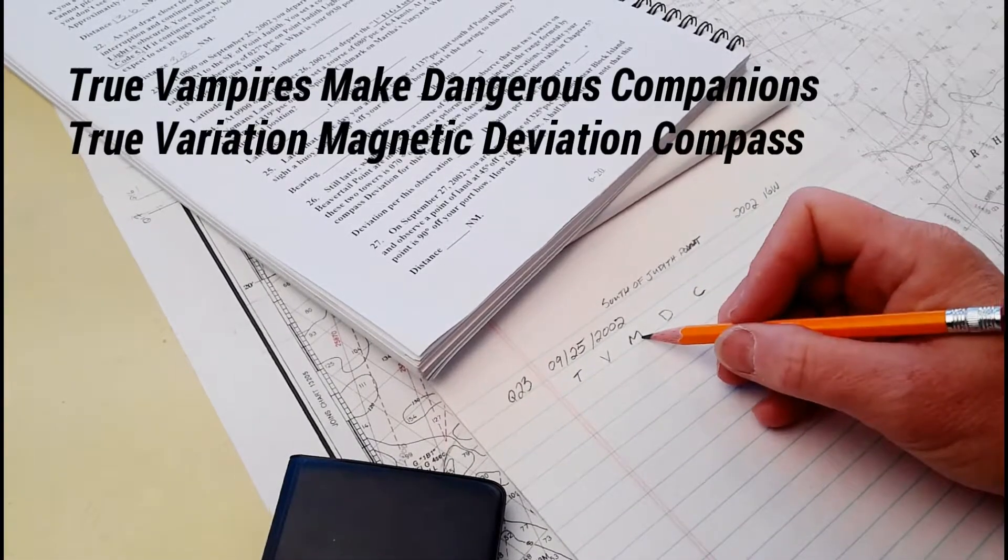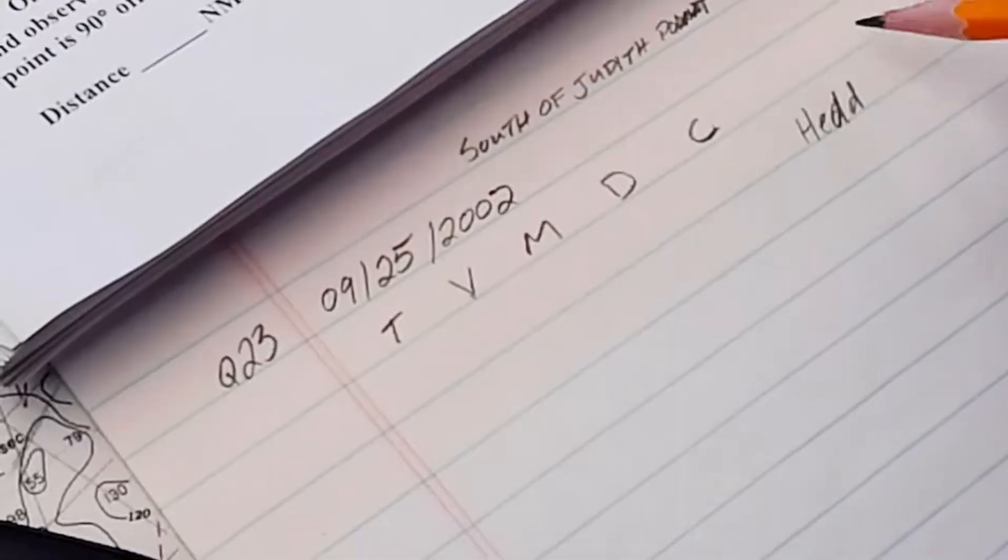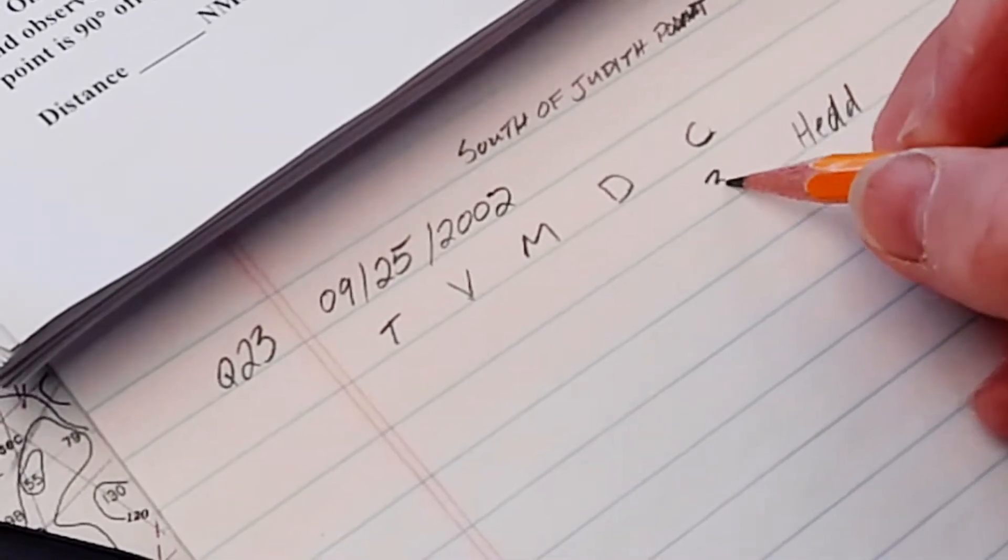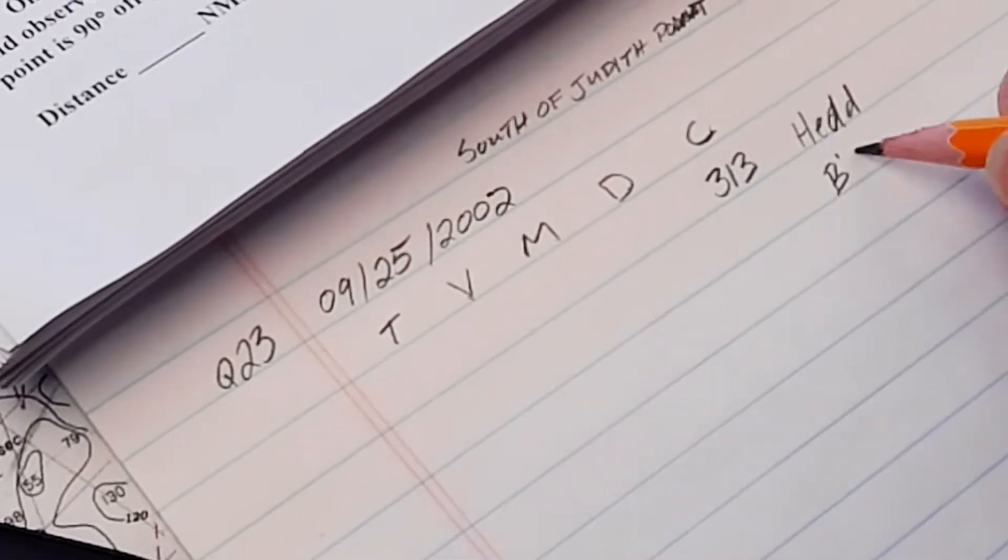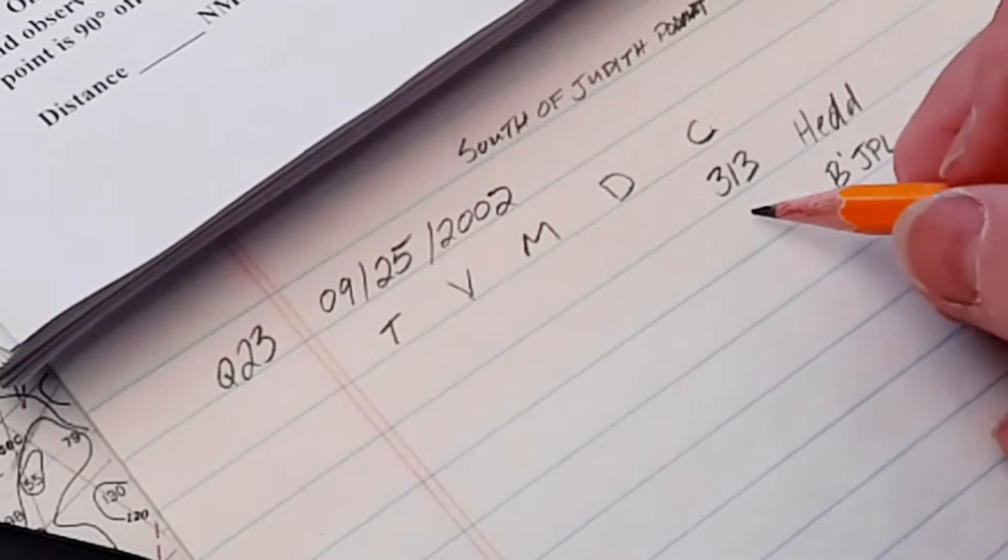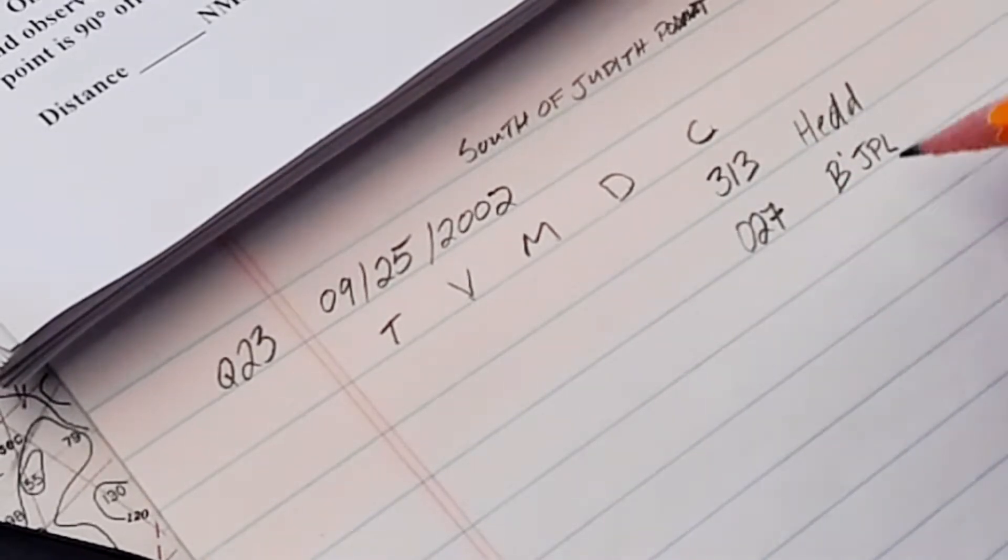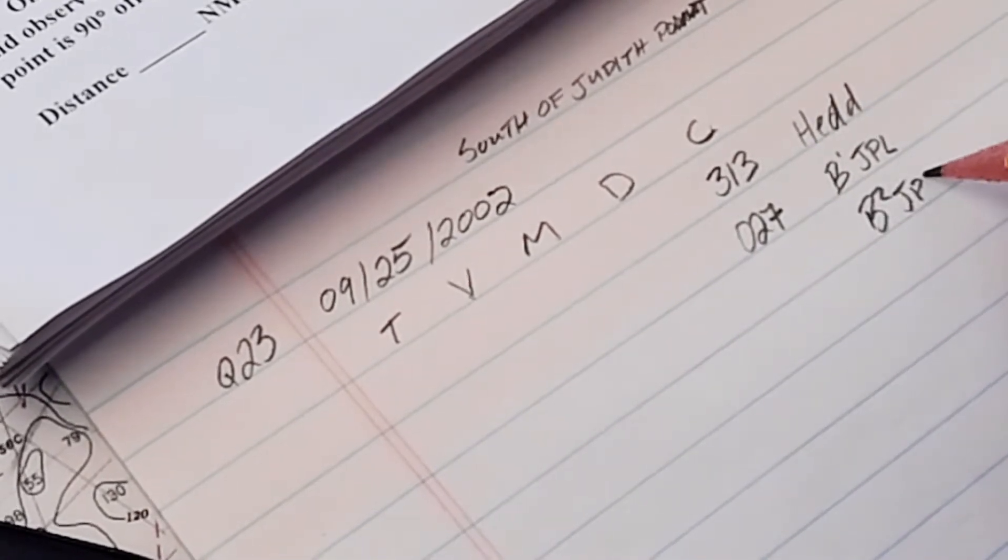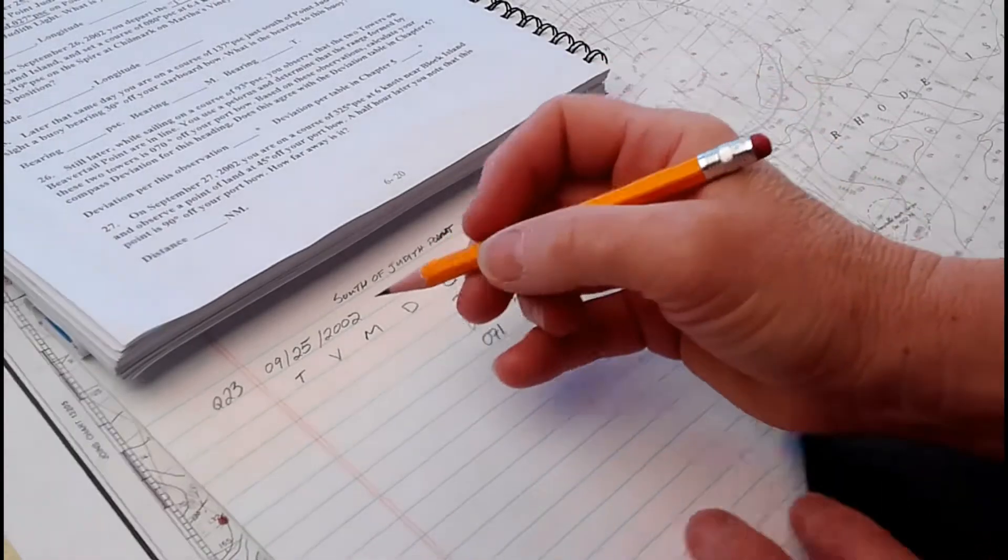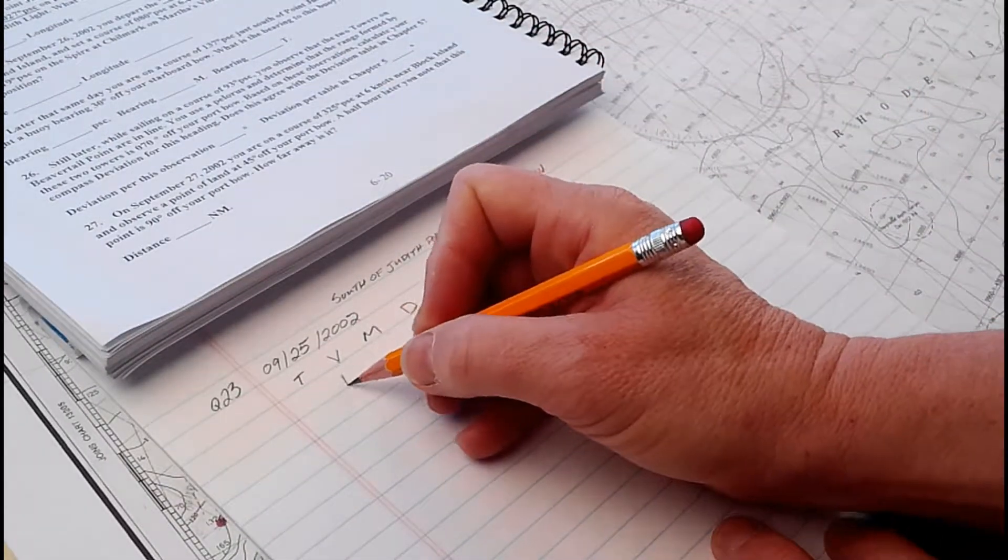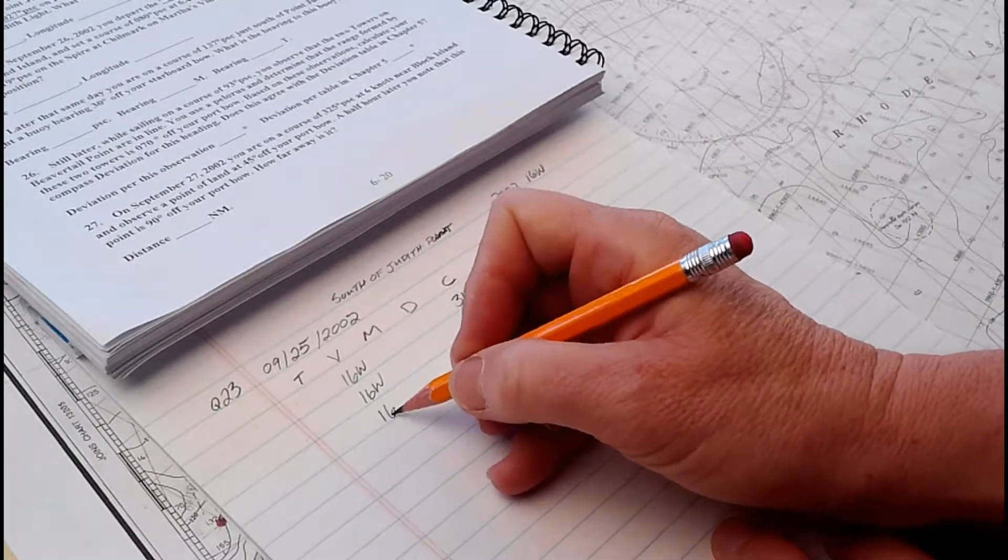TVMDC - True Vampires Make Dangerous Companions, that's how I like to say it. Our heading is 313, our first bearing on Point Judith Light is 027, our second bearing is 071. At 16 degrees west variation, we can fill these in: 16 west, 16 west, 16 west.